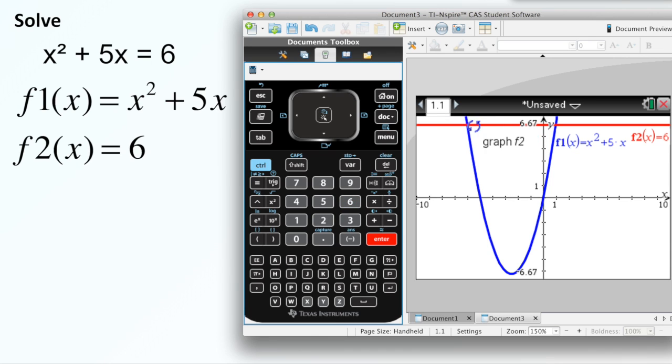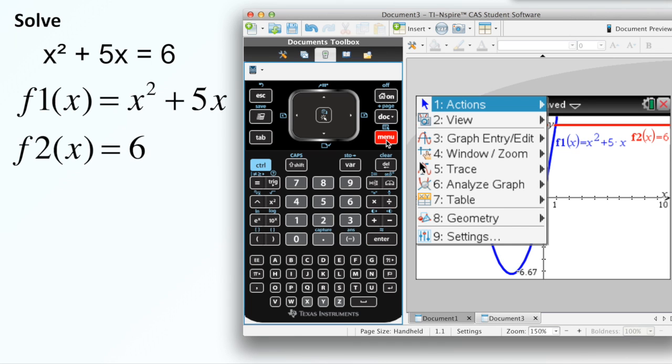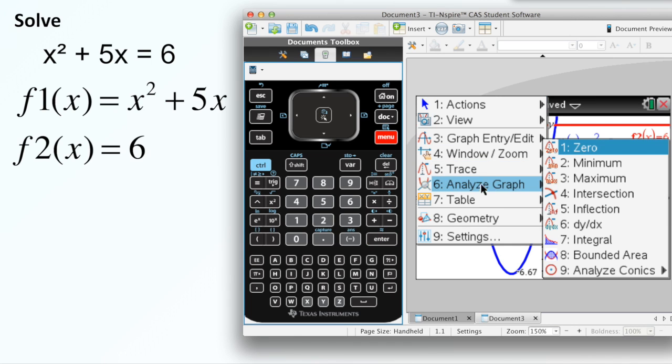Okay, so it looks like it intersects right here, and it intersects over here. Now, I can move my window around and make it a little bit easier to view if you want. I'm just going to leave it alone with this one right now. I don't see the need to move it around yet. So what we're going to do is we're going to look for the intersection point right here. So I'll go into Menu, Analyze Graph, Intersection.